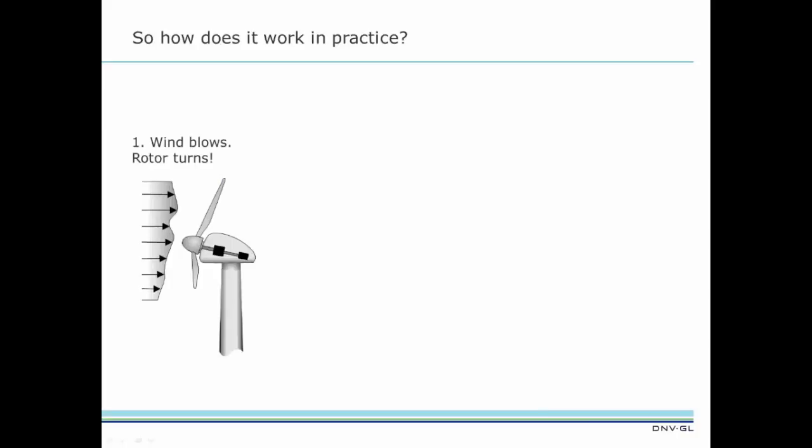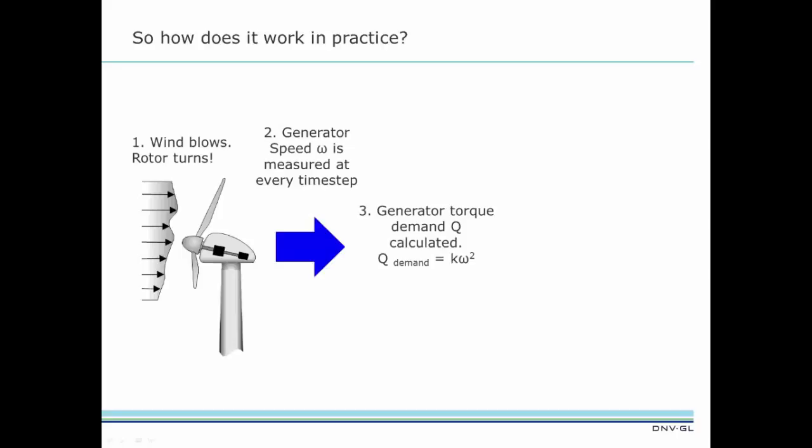So how does it work in practice? Well, the wind blows and the rotor turns. Generator speed is measured at each time step. From this, the generator torque demand is calculated using the optimal mode gain value, K.